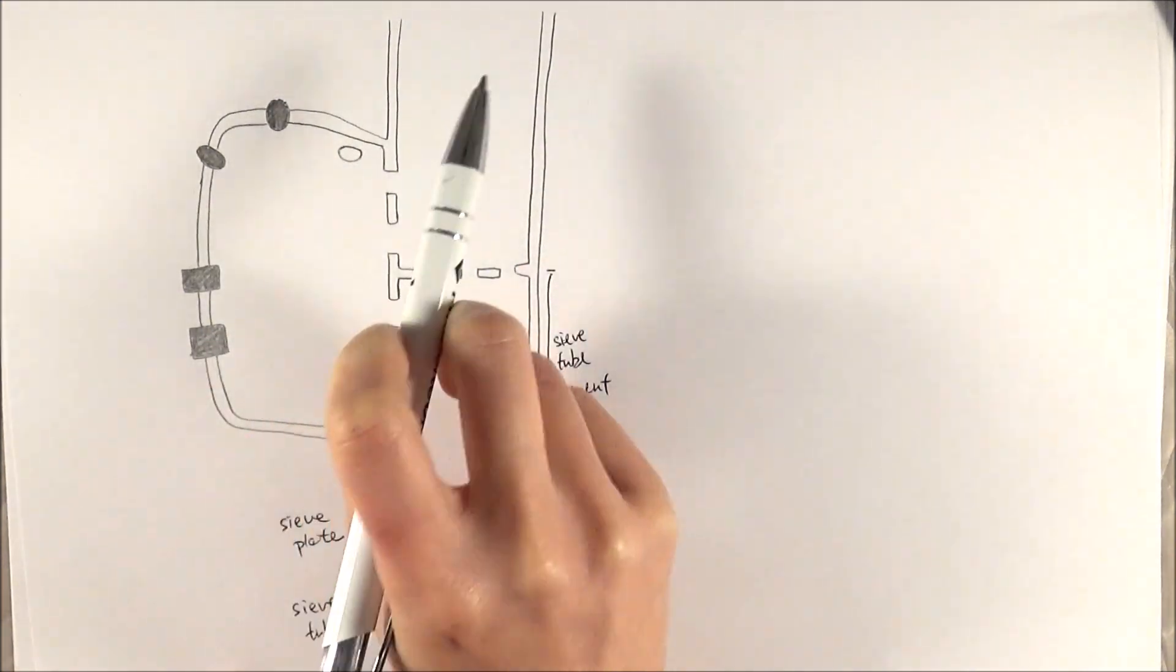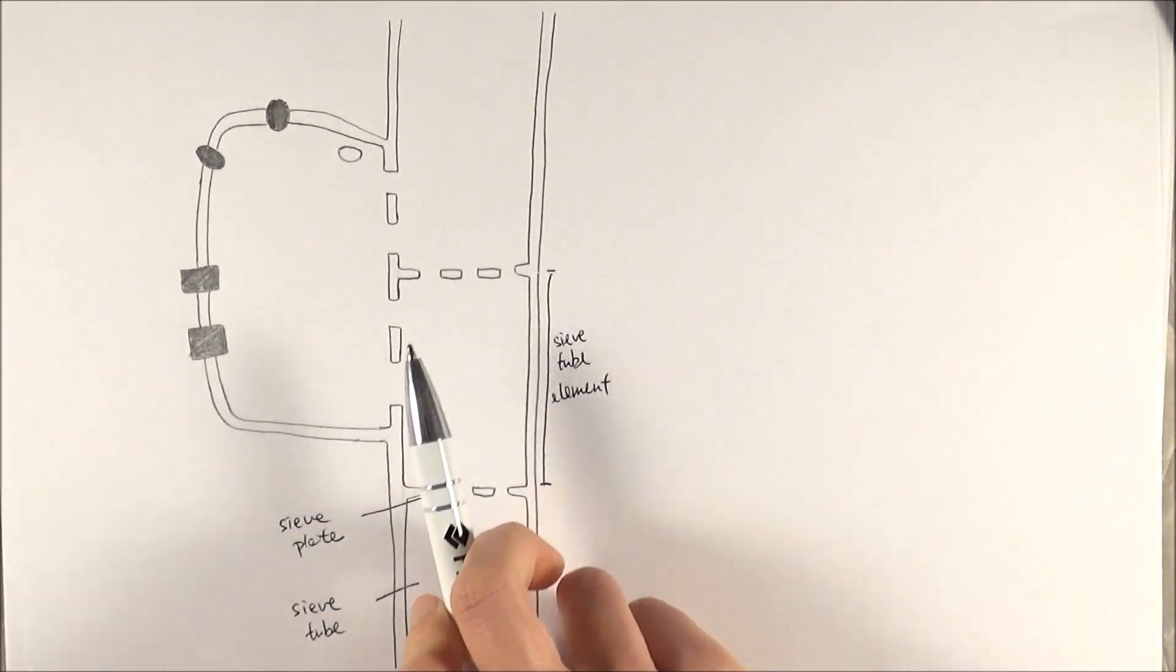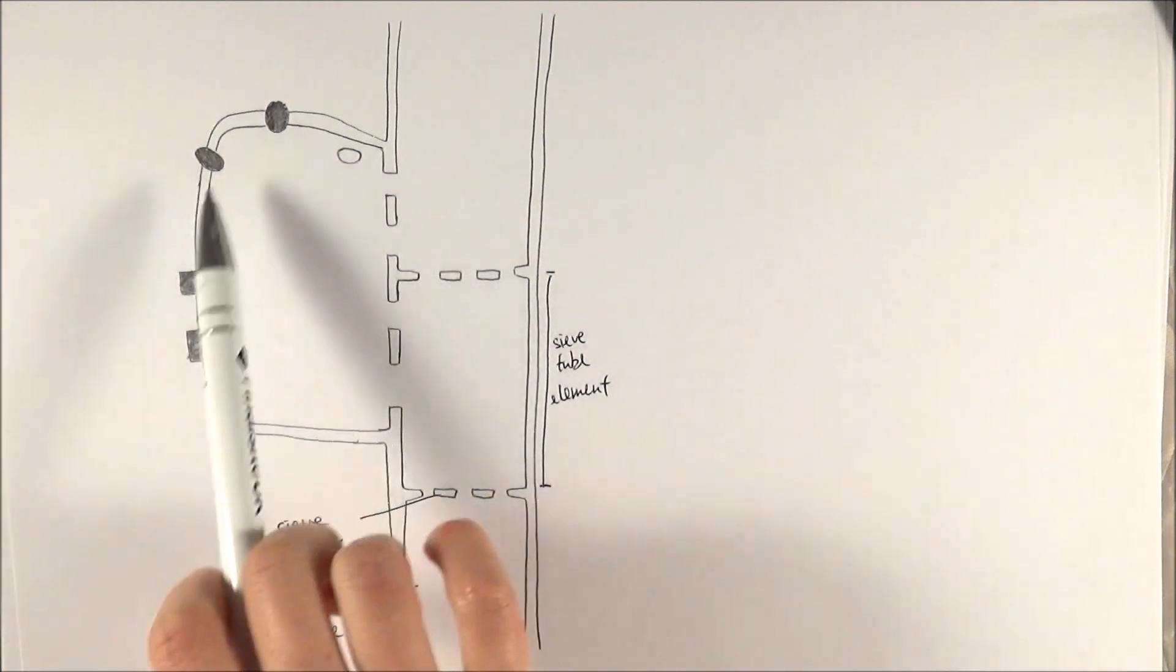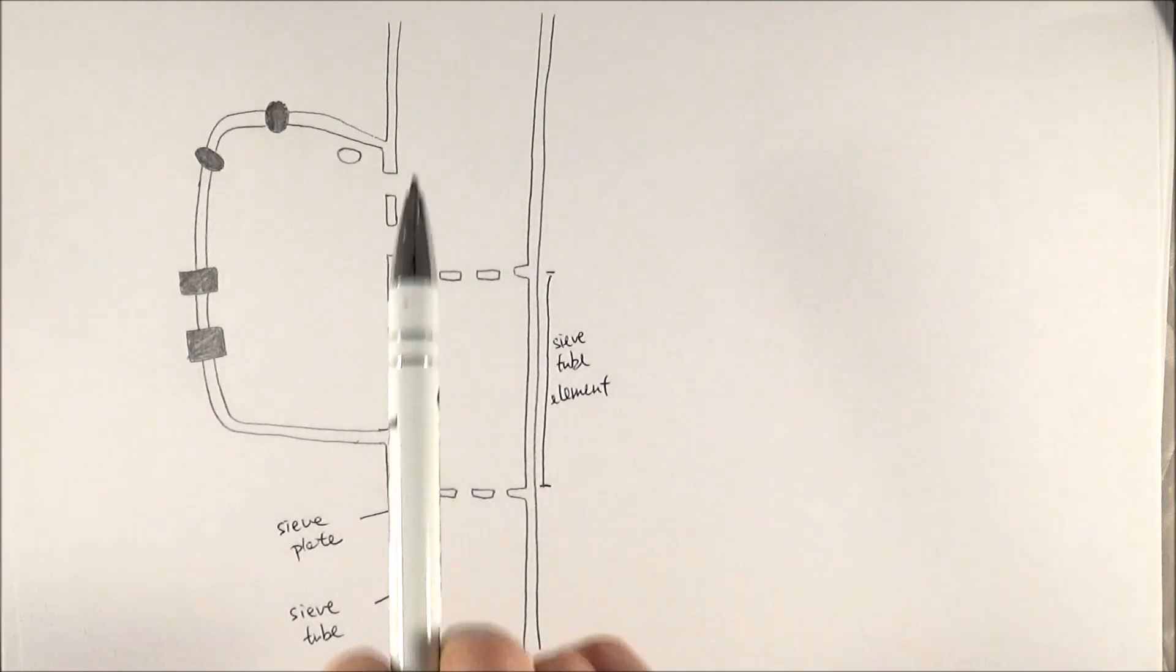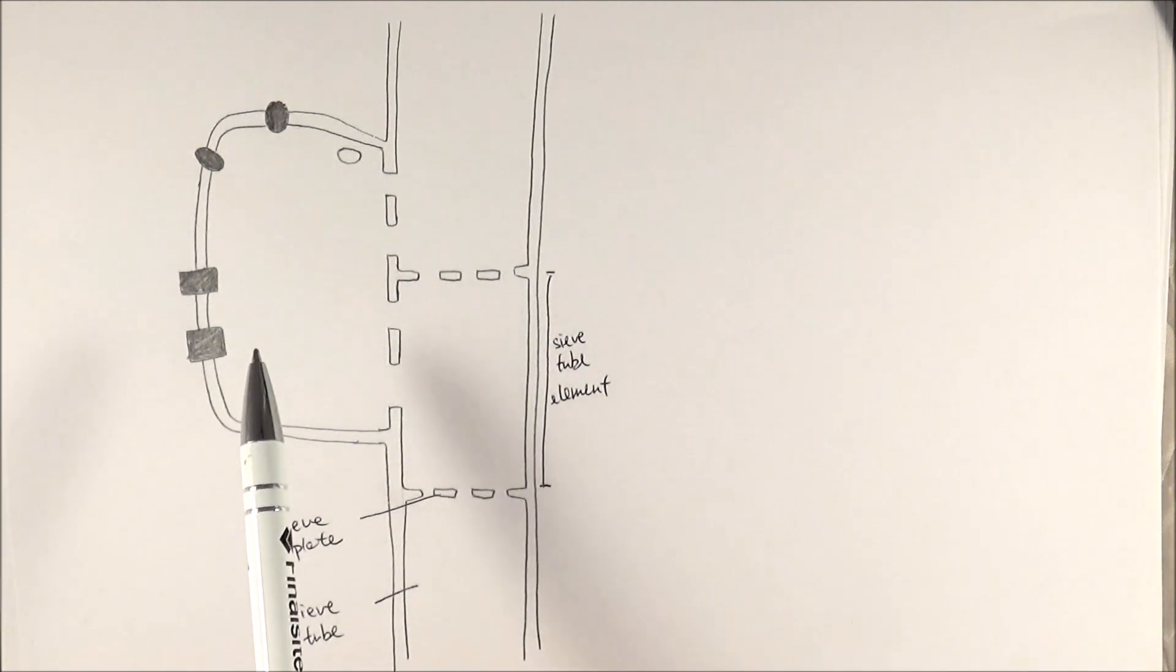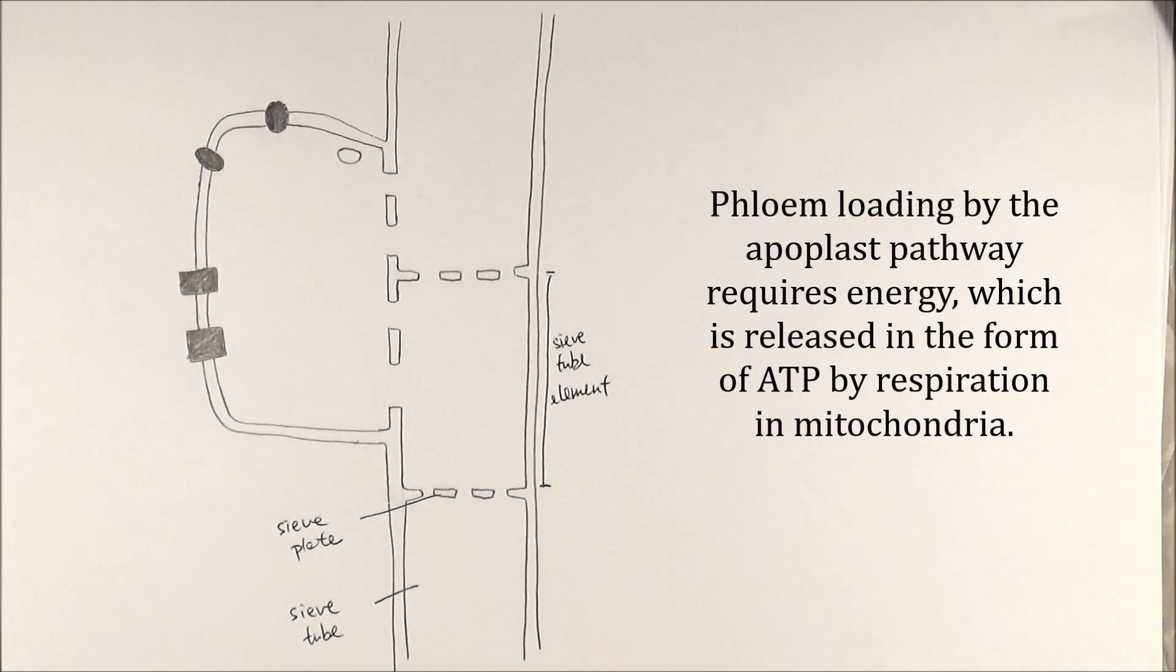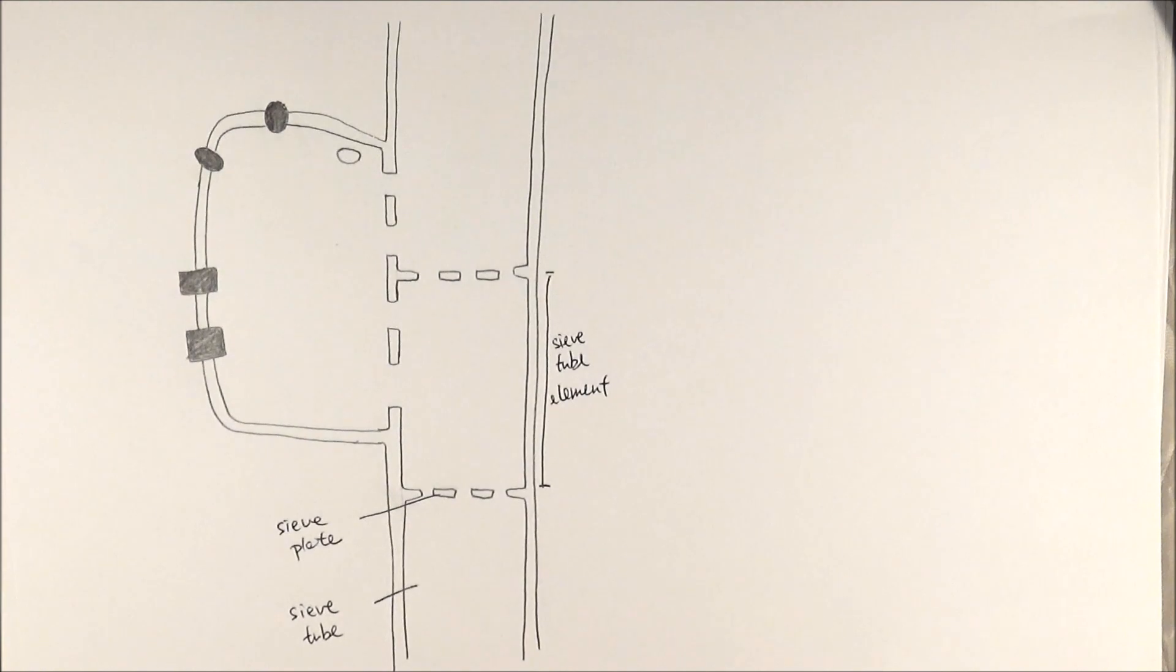This is the nucleus of the companion cell. In order to facilitate easy transportation of sugars, we need to make sure there's not a loss of substances or organelles to stop that flow. The survival of the phloem relies on these companion cells. It's important that they are alive because the process of phloem loading in the apoplast pathway is an active pathway. It requires energy. If we don't have a living cell, we can't generate ATP for it to occur.